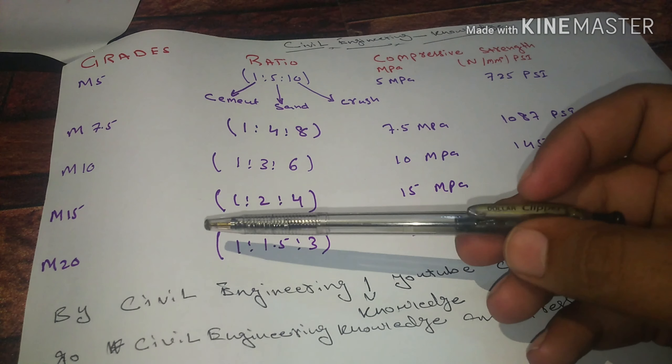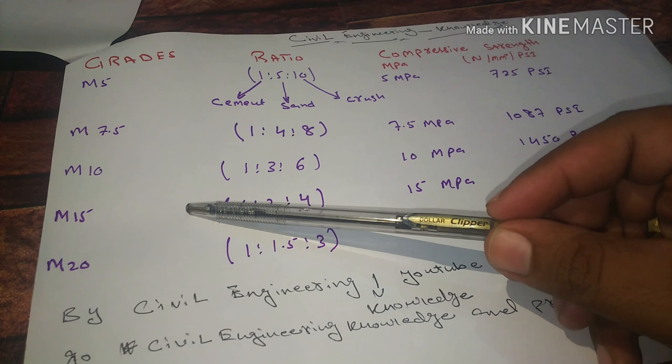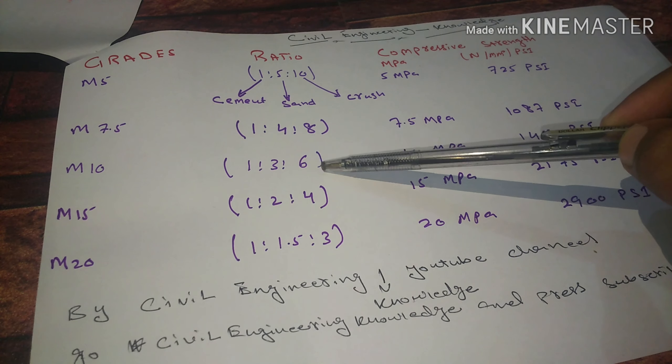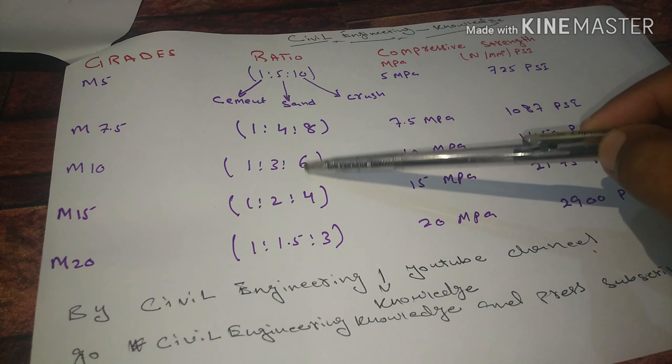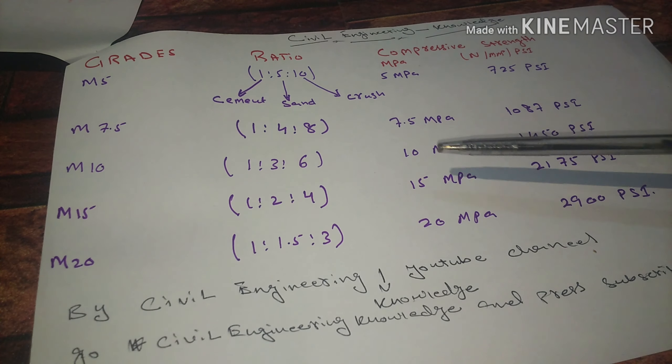Number three is M10, this is 1:3:6 ratio, and the strength is 10 MPa and 1450 PSI.